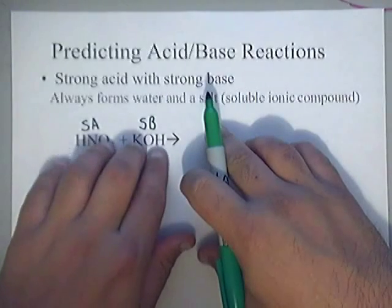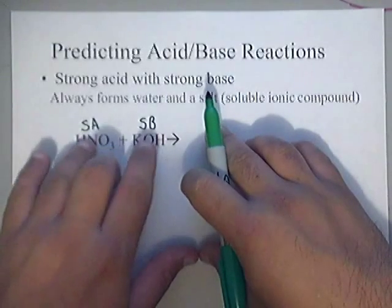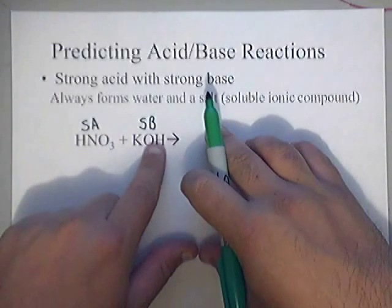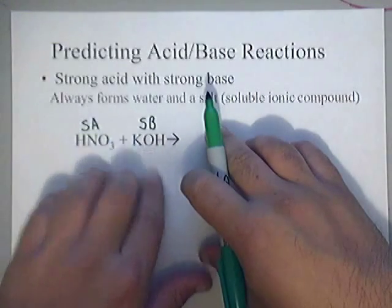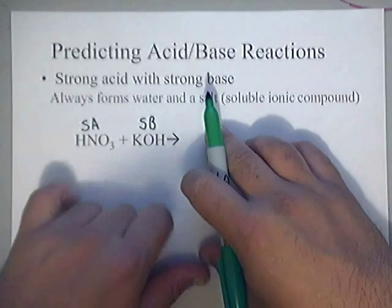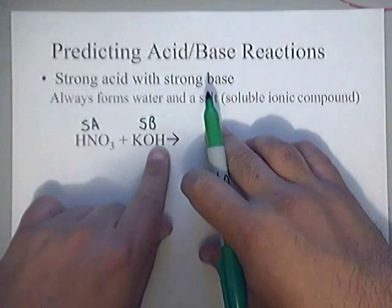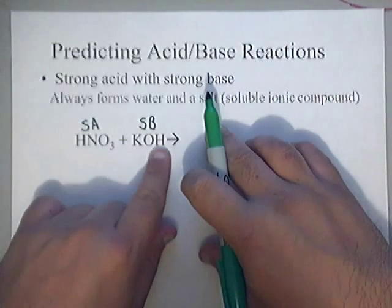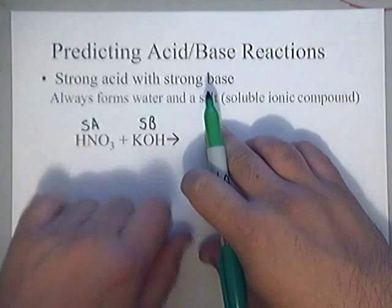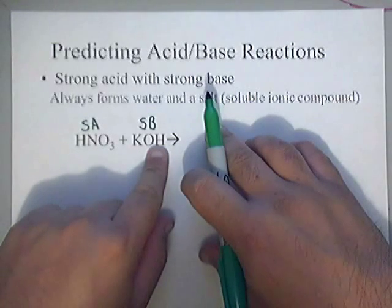Now if I didn't have these memorized, you might be wondering, how do you know which one's the acid? How do you know which one's the base? Well, it's kind of easy. The one that's got hydrogen in the front is normally and more likely your acid. The one that has the OH trailing on the back is your base. So H is in the front, that's going to be your acid. OH on the back is going to be your base.